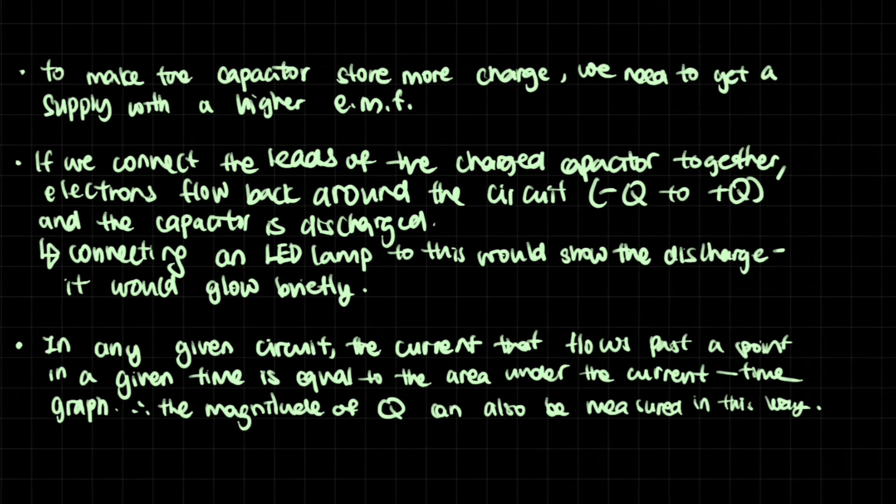In order to make the capacitor store much charge, we need to get a supply with a higher electromotive force. I think this is pretty self-explanatory. The charge will stop flowing when the electromotive force equals potential difference. If the electromotive force is higher than the potential difference that the final capacitor will have is going to be higher, which means more charge has flown into the capacitor.